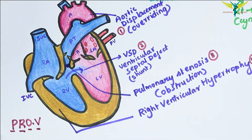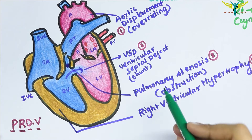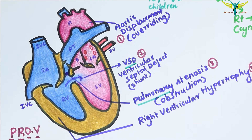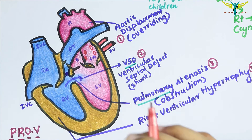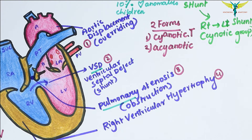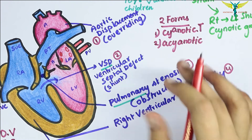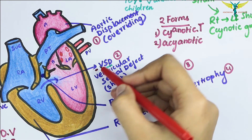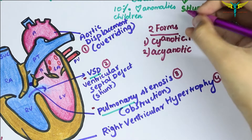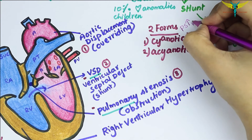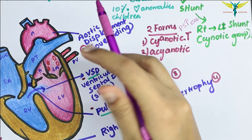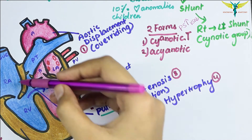The clinical manifestations of Tetralogy of Fallot mainly depend on two factors: the extent of pulmonary stenosis and the size of the ventricular septal defect. There are two forms: cyanotic and acyanotic. In the cyanotic form, pulmonary stenosis is greater and the VSD is mild, resulting in more resistance to blood outflow from the right ventricle, which causes a right-to-left shunt at the ventricular level and cyanosis.